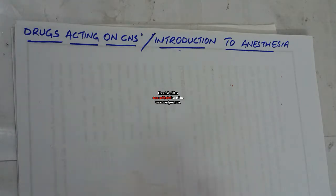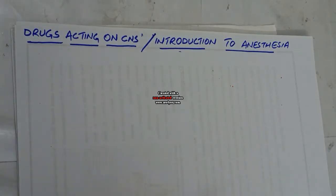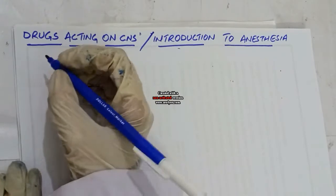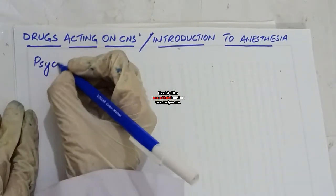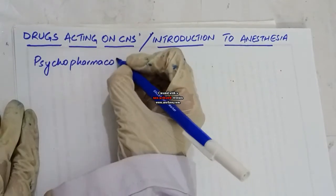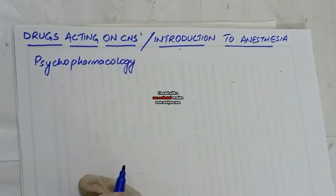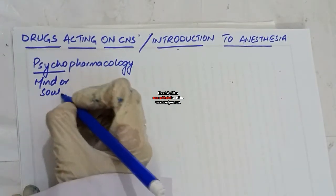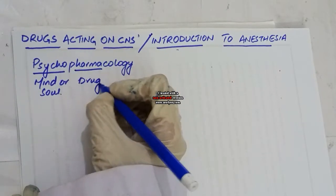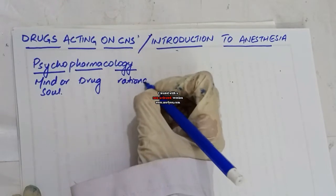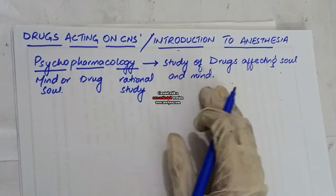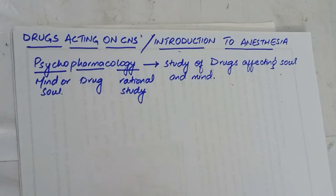In this video we are going to talk about drugs that act on the central nervous system. This is the introductory lecture to anesthesia. The basic term used for these drugs or their study is psychopharmacology. Psychopharmacology is a Greek word combining three Greek words: psycho means mind or soul, pharmacone means drug, and logos means rational study. So it is defined as the study of drugs affecting the soul and mind.